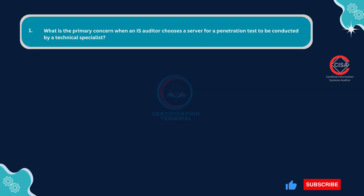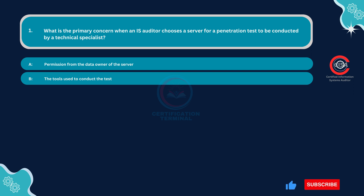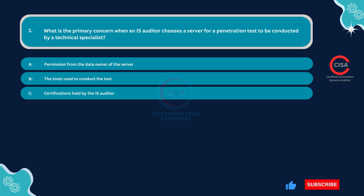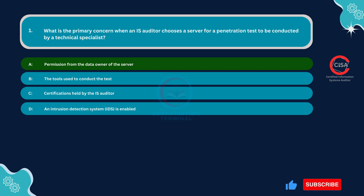Question number one: What is the primary concern when an IS auditor chooses a server for a penetration test to be conducted by a technical specialist? Option A: Permission from the data owner of the server. Option B: The tools used to conduct the test. Option C: Certifications held by the IS auditor. Option D: An intrusion detection system is enabled. The correct answer is Option A — permission from the data owner of the server.